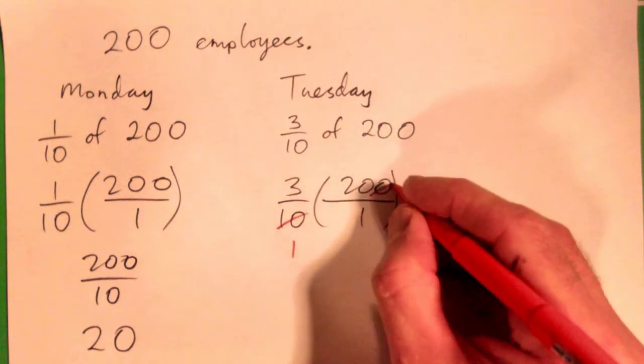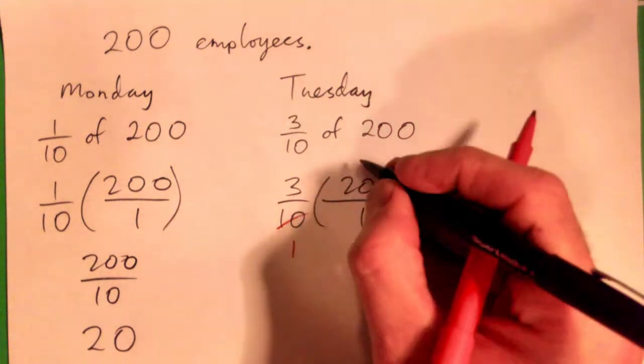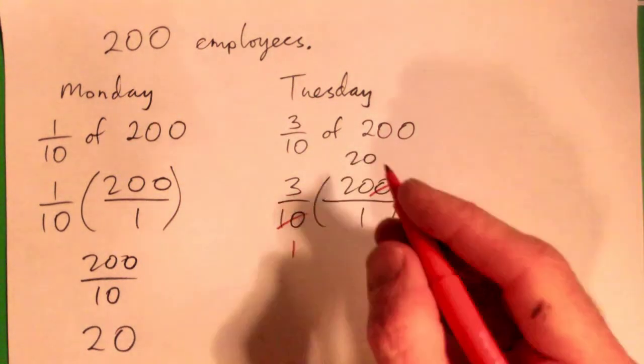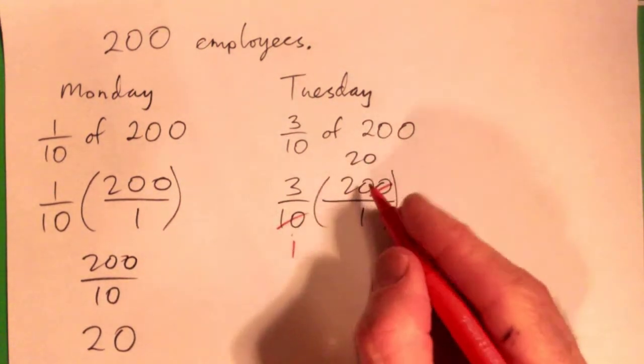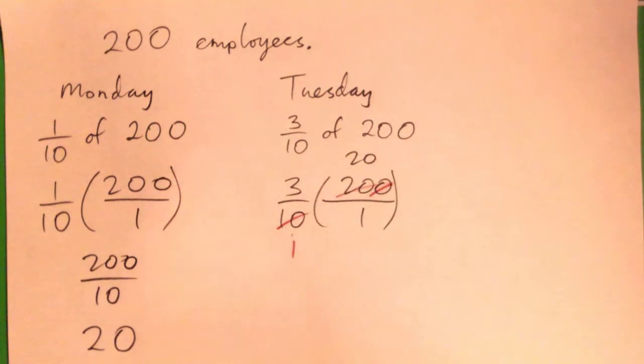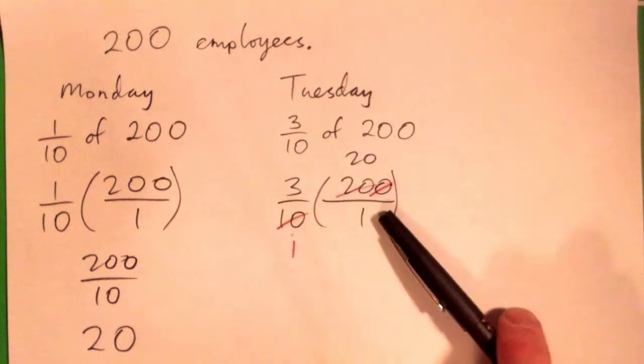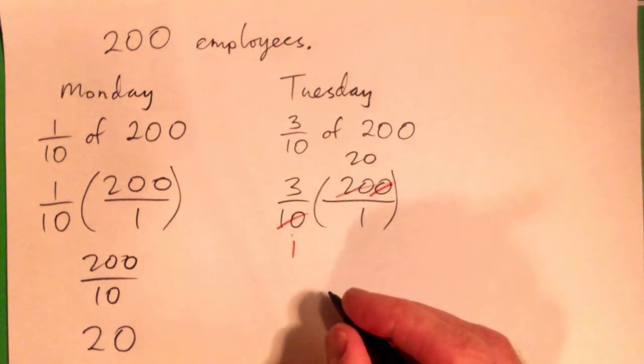You can actually just knock off that zero at the end, because it's just 20. So 10 to 10 goes once, 10 to 200 is 20. So we have 3 times 20 over 1 times 1, which gives 60.